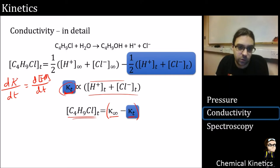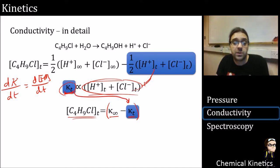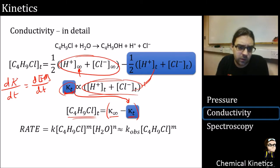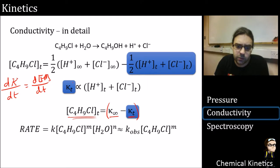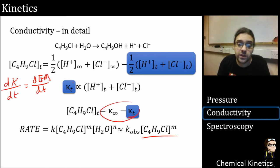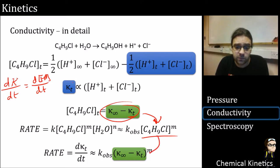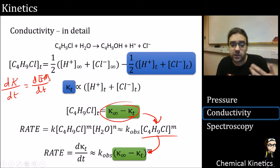We substitute conductivity in: the rate equals K_obs times the difference in conductivity values (κ_∞ − κ_t), raised to power M because we don't yet know the reaction order — although it's probably going to be first order.